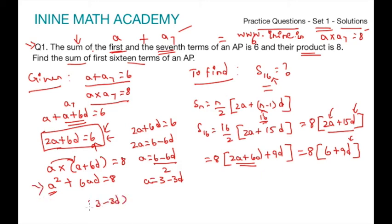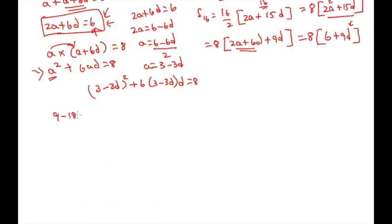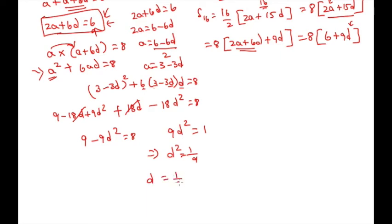We will get 3 minus 3d plus 6 times 3 minus 3d into d equal to 8. On expanding we will get 9 minus 9d square equal to 8. Minus 18d and plus 18d we can cancel. We could get 9 minus 9d square equal to 8 or 9d square equal to 1. This implies d square equal to 1 by 9, or we can have d equal to 1 by 3 or minus 1 by 3 by taking square root on both sides. We got 2 values of d.